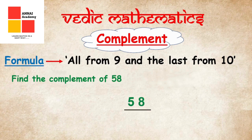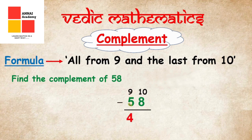We have taken the number 58 to find its complement. Remember the formula: All from 9 and last from 10. The last digit of 58 is 8, so we minus 8 from 10. We start the sum from the left hand side: we minus 5 from 9 and get 4, then minus 8 from 10 and get 2. The complement of 58 is 42.